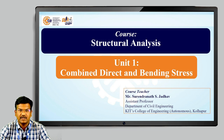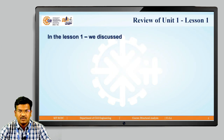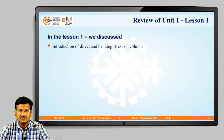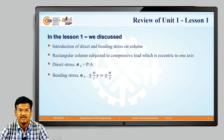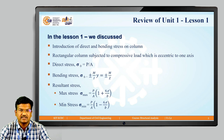We are discussing unit number one, that is Combined Direct and Bending Stress. This is our second lesson, so let us recall the first lesson. In lesson one we discussed the introductory part about direct and bending stress on a column. A rectangular column subjected to compressive load eccentric to only one single axis, and from this derivation we found formulas: direct stress sigma naught equals P by A; bending stress sigma B equals plus or minus M upon I multiplied by Y, or plus or minus M upon Z; and resultant stress is the combination of direct and bending stress. Maximum stress sigma max equals P by A times (1 plus 6E divided by B), and minimum stress sigma min equals P by A times (1 minus 6E divided by B).